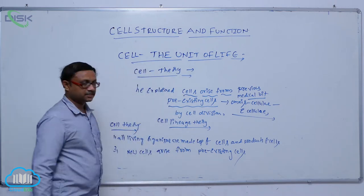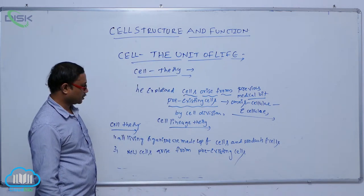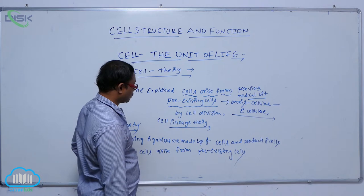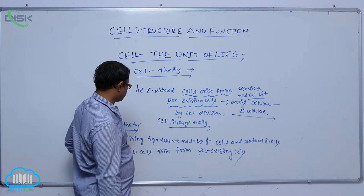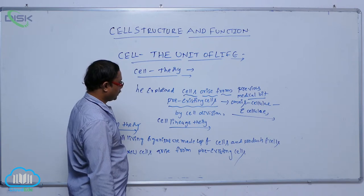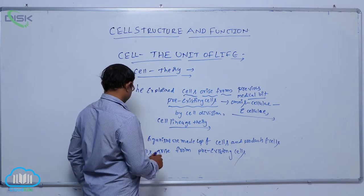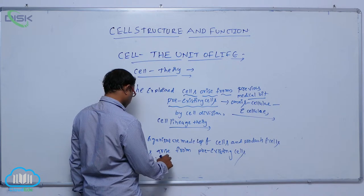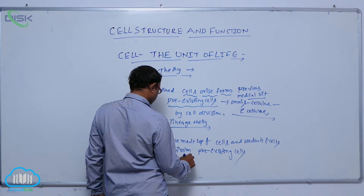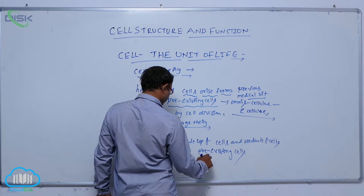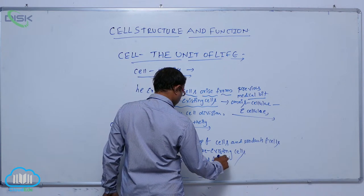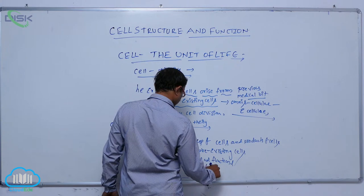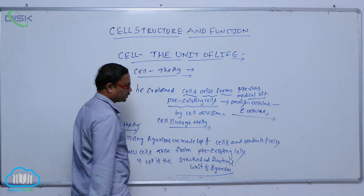So the components of cell theory are: all living organisms are made up of cells and products of cells, new cells arise from pre-existing cells, and the cell is the structural and functional unit of an organism.